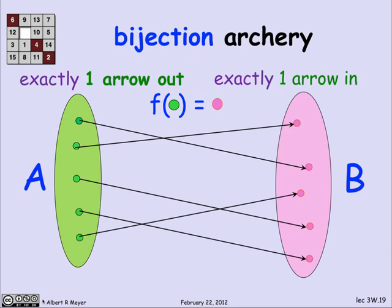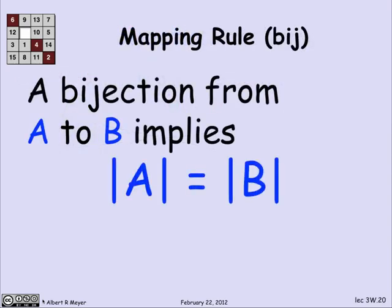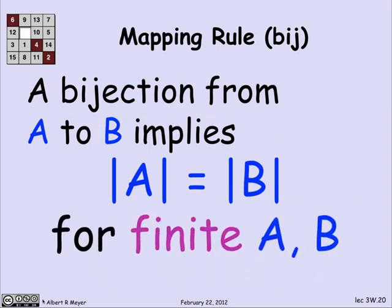Now, there's an obvious thing, though, about bijections, which we'll wrap up with, which is why they're useful in counting theory, because it's clear that since there's exactly one arrow out of every element in A, the number of arrows is the same as the size of A. And since there's exactly one arrow coming into every element of B, the number of arrows is the same as the size of B. And guess what? That means that where there's a bijection, the sets are of equal size. If there's a bijection between two finite sets A and B, that means that they're the same size.